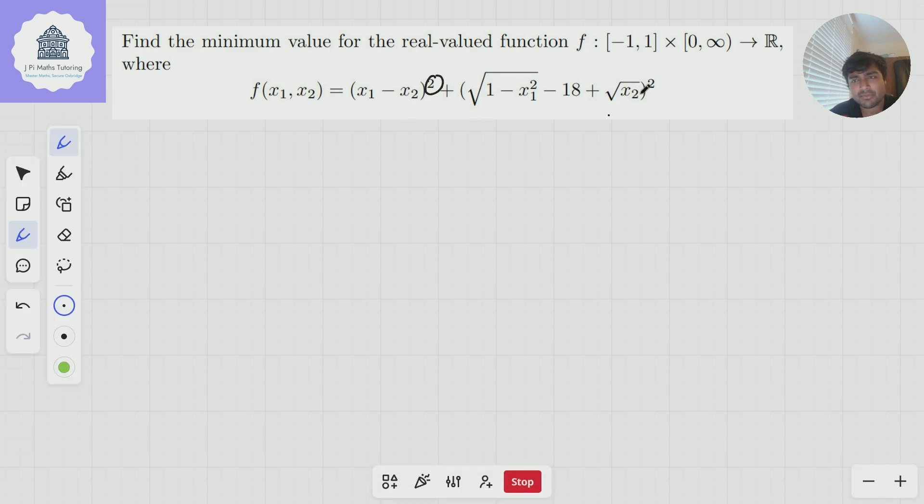What do I notice? Well, I notice that I've got the sum of two squares. It'd be nice if it was the difference and maybe we could use the difference of two squares, but it isn't. It's a sum, but that reminds me of Pythagoras. I've also noticed that this bracket is far nicer than this bracket. This one looks ugly, really horrible. So I'm going to draw my attention to the nicer looking one.